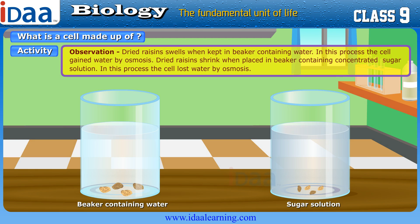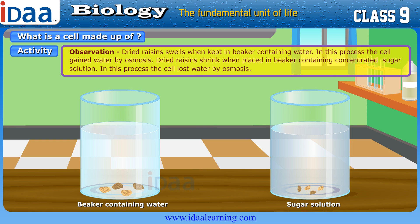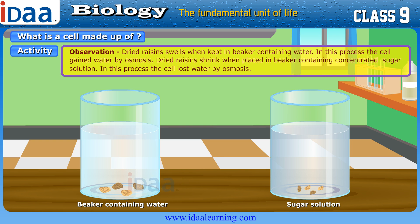Observation: Dried raisins swell when kept in a beaker containing water. In this process, the cell gained water by osmosis. Dried raisins shrink when placed in a beaker containing concentrated sugar solution. In this process, the cell lost water by osmosis.